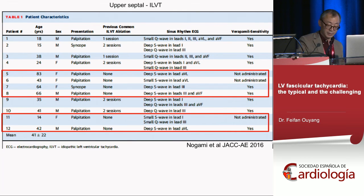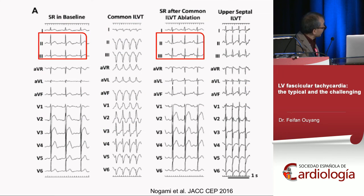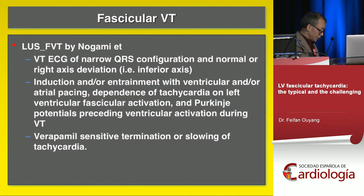If you ablate posterior fascicular VT, you sometimes induce an unexpected finding — what we call upper septal ventricular tachycardia, or opposite VT. This was demonstrated by Nogami. The ECG shows that after posterior fascicular tachycardia ablation, the surface ECG inferiorly changes — the patient gets a clear QR wave. The induced VT before had an almost identical circuit size. This is the definition of upper septal VT: the ECG shows left bundle morphology with normal or left axis deviation.